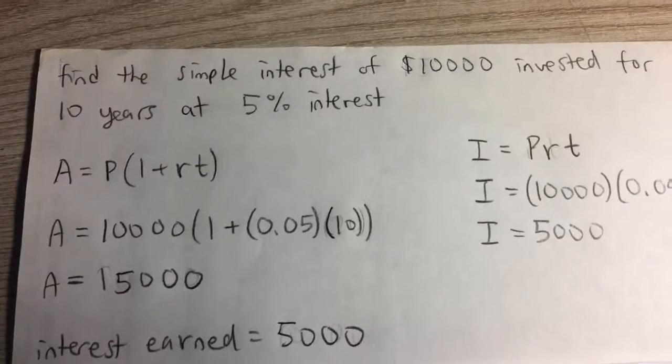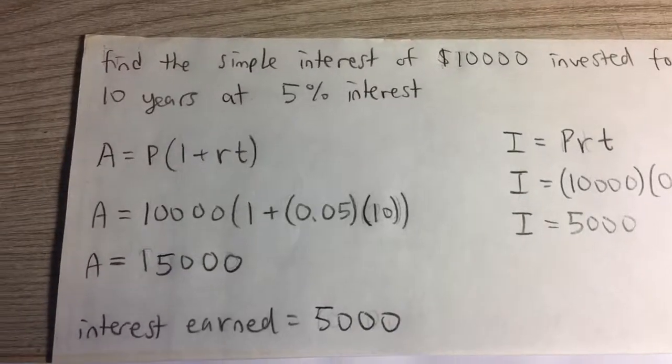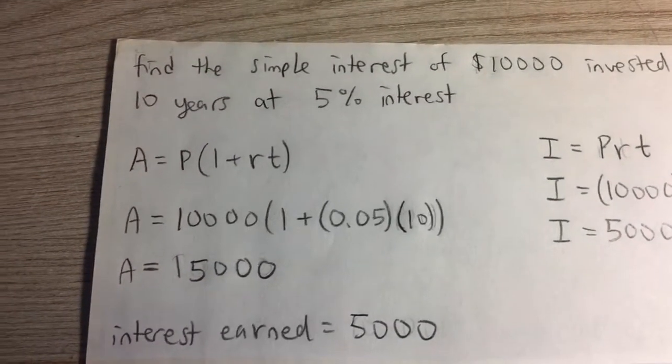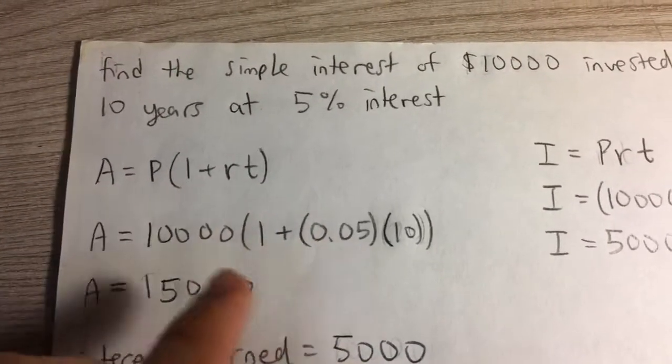Find the simple interest of $10,000 invested for 10 years at 5% interest per year. There are actually two ways to do this. One way is to use the formula for future value.